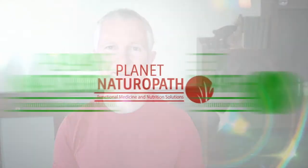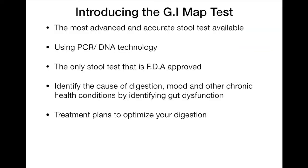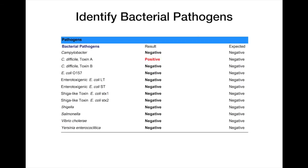So let's have a look at the GI map test and I'll explain how it relates to your health. The GI map test is the most advanced and accurate stool test available. It uses the latest in PCR and DNA technology. It helps us to identify the underlying cause — not just of your digestion problems, but other chronic health issues. This helps me to implement a treatment plan to help you get back on track with your health. Let's have a look at some of the markers on this test.